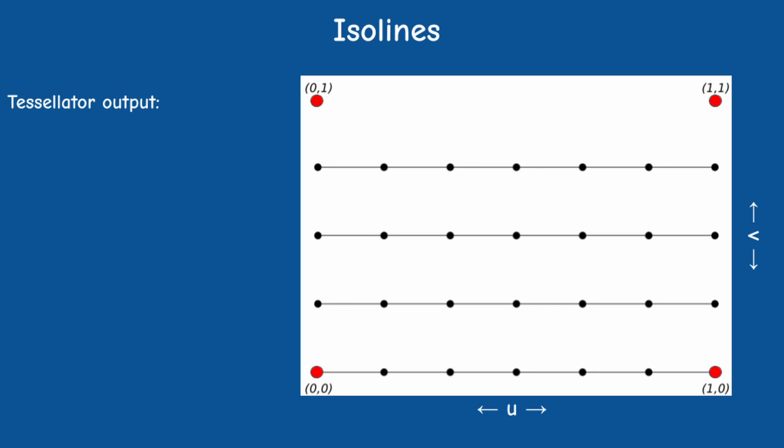By default the tessellator outputs a line list by creating pairs of vertices for each segment. However, you can configure it to output a list of points by specifying point mode in the input layout specifier of the tessellation evaluation shader.